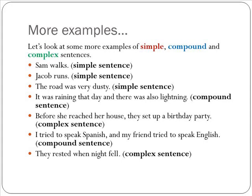Let's review our three sentence types with more examples. "Sam walks" is a simple sentence. "Jacob runs" is another simple sentence. "The road was very dusty" is also a simple sentence. "It was raining that day, and there was also lightning" is a compound sentence. "Before she reached her house, they set up a birthday party" is a complex sentence. "I tried to speak Spanish, and my friend tried to speak English" is another compound sentence. And "they rested when night fell" is a complex sentence.